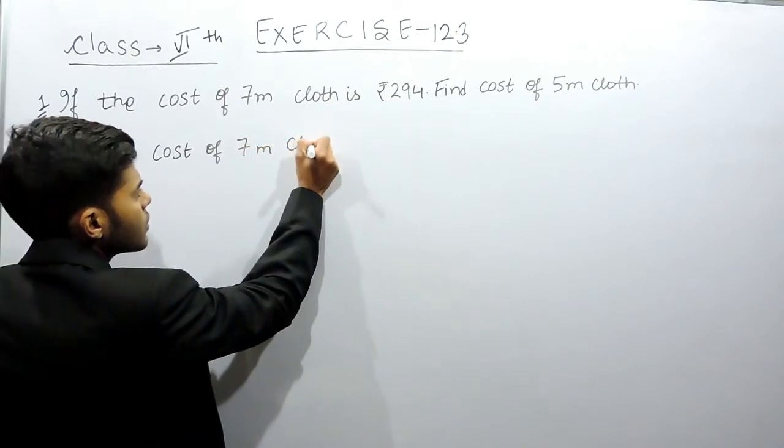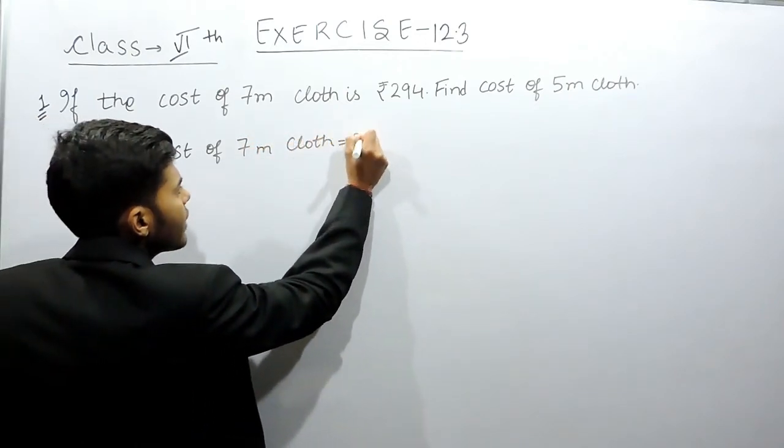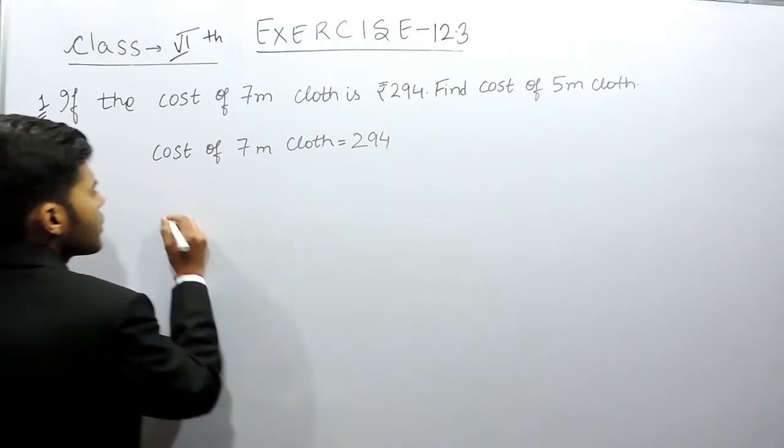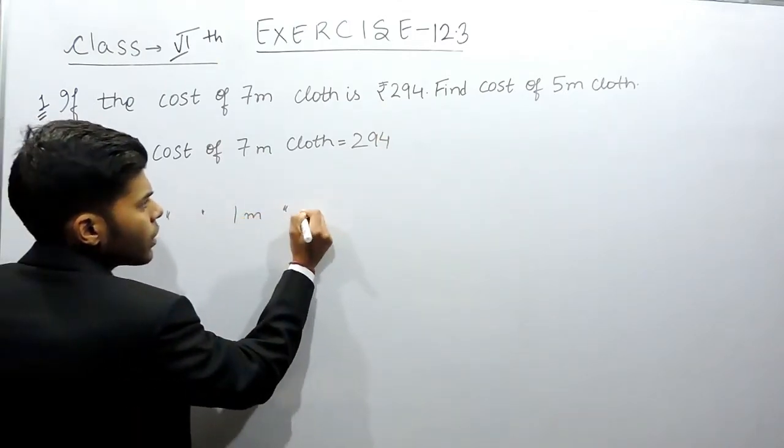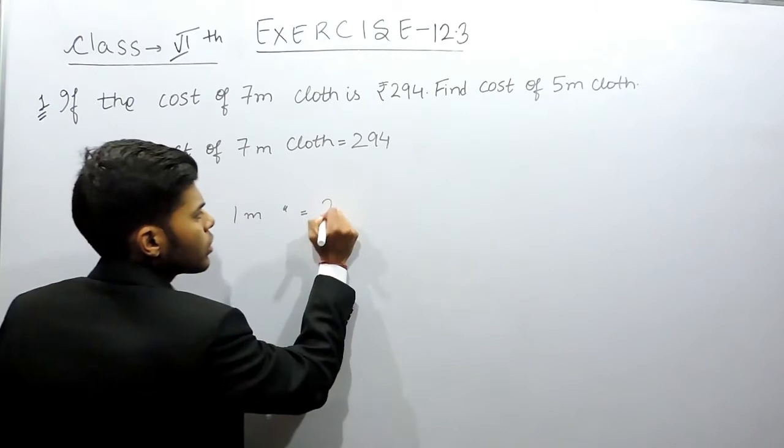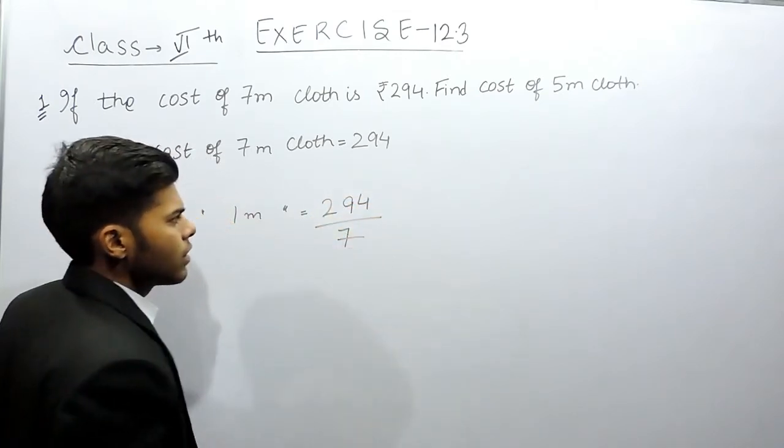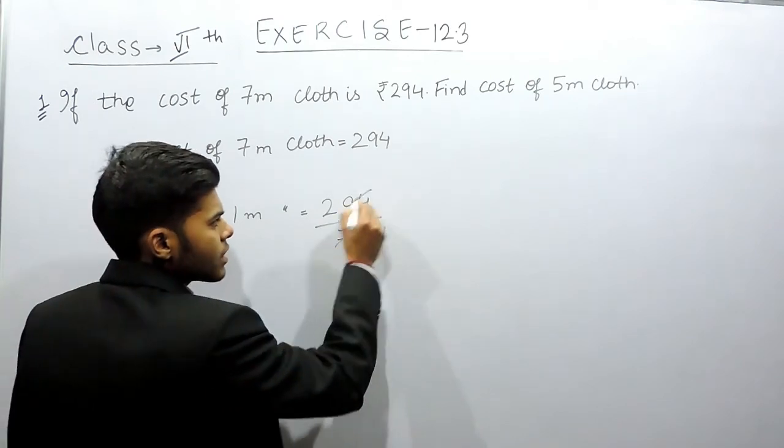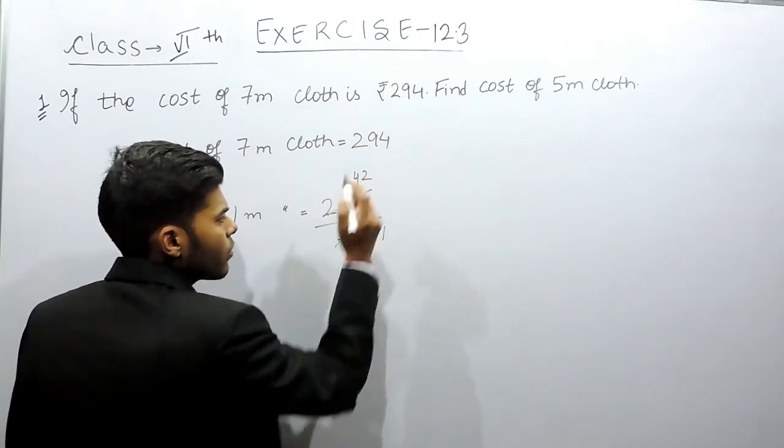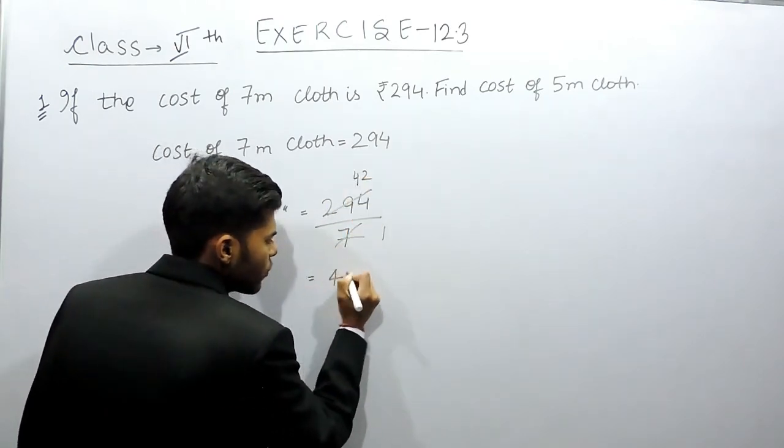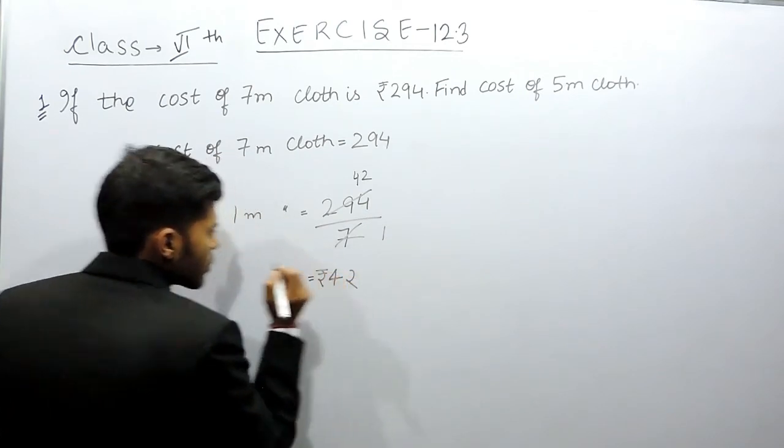Now cost of 7 meter cloth is equals to 294, so cost of 1 meter cloth will be equals to 294 by 7. So 7 1 times, 7 4 times 28, 7 2 times 14, that will be equals to 42 rupees. So this is the cost of 1 meter cloth.